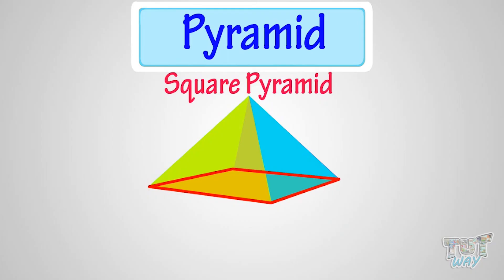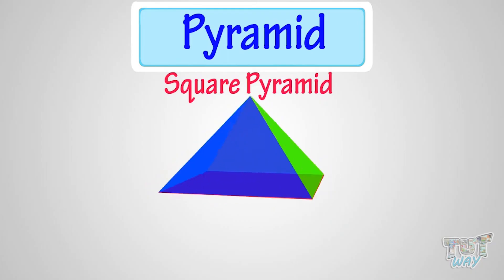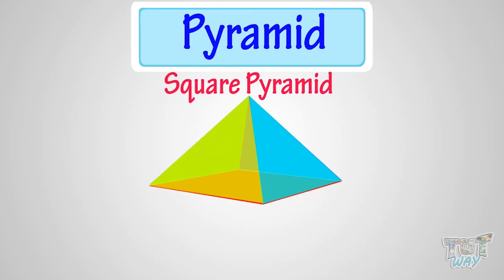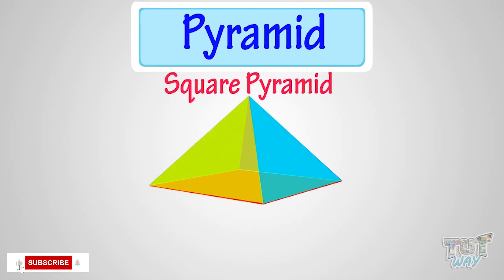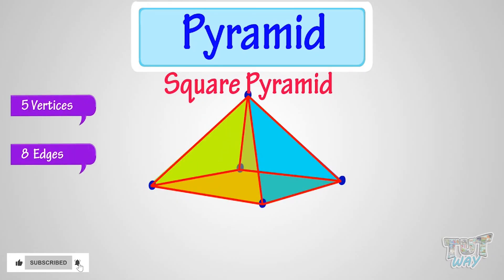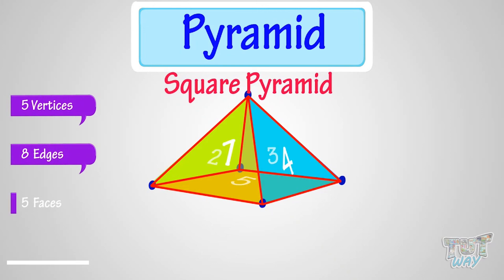This is a square pyramid, because its base is a square, and all other faces are triangle, and converge to a single point. It has 5 vertices, 8 edges, and 5 faces.